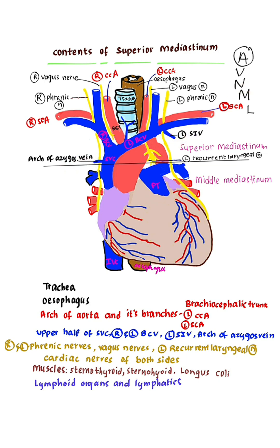Regarding nerves, you can see two sets here: the Right and Left Vagus Nerves, the Right and Left Phrenic Nerves, and the Left Recurrent Laryngeal Nerve, along with Cardiac Nerves of both sides.